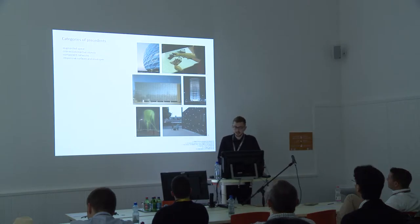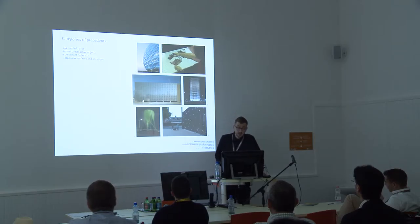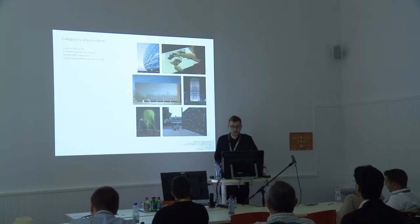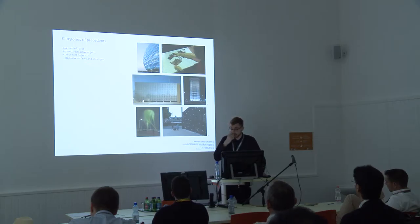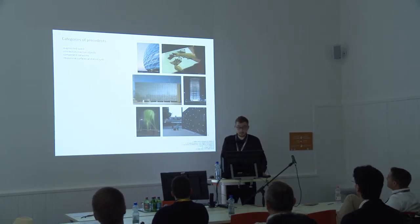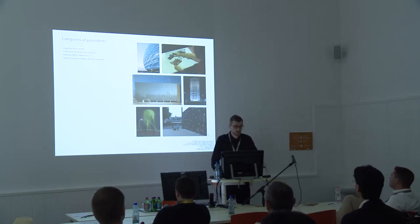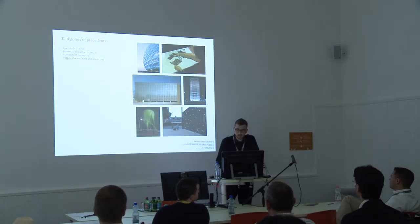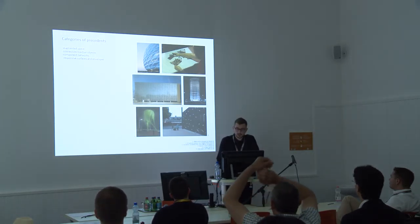Interactive and reactive objects are slightly different because they implement sculptural objects within which reactive media takes place — for instance, the Toyota Tower of the Winds or the D Tower by Nox. Component networks is yet another category: discrete components that have the ability to interact with one another but can also act independently, with the example of the Urban Pixel project by the MIT Media Lab.